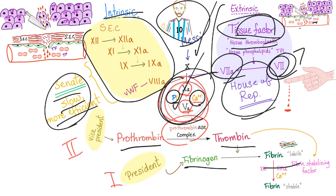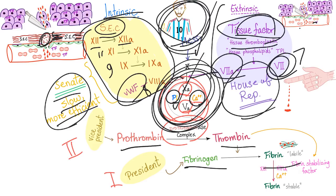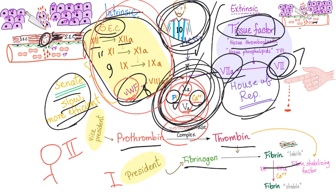The intrinsic pathway, on the other hand, is longer. Start with factor 12, one of the contact group — it has to come in contact with the subendothelial collagen in the basement membrane of the blood vessel, which means there is trauma. When it comes in contact, factor 12 is active, factor 11 is active — skip 10, because 10 is important in the common pathway — then we have 9 and 8. Remember, von Willebrand factor is part of factor 8. Von Willebrand factor is part of the coagulation cascade and part of primary hemostasis, because platelets need something to adhere to — the von Willebrand factor.